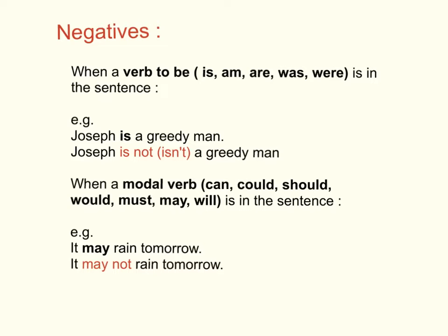As we know, the word 'not' is used to change the affirmative statement into the negative statement. 当我们想将一句肯定的句子变做一句否定的句子的时候，我们就会用not那个字。怎样加法呢？When a verb to be — verb to be包括些什么呢？Is, am, are, was, were — is in the sentence.